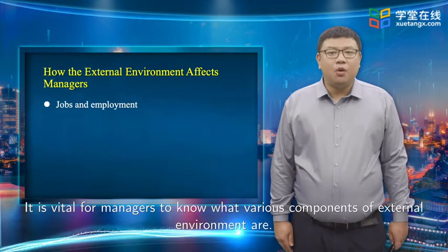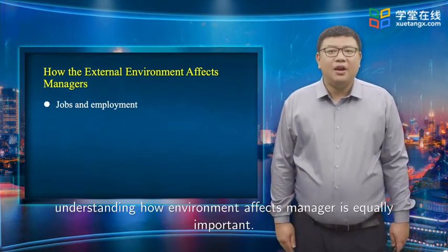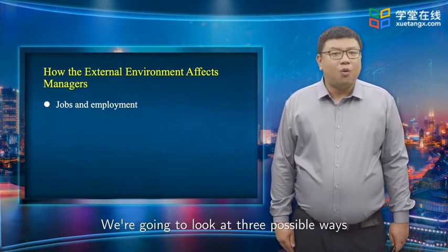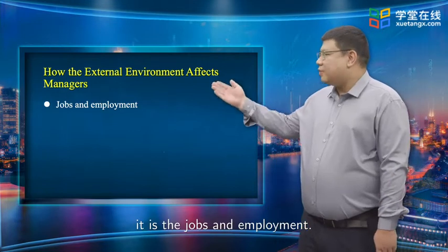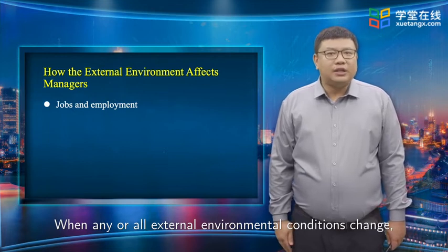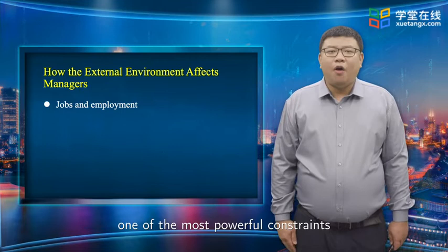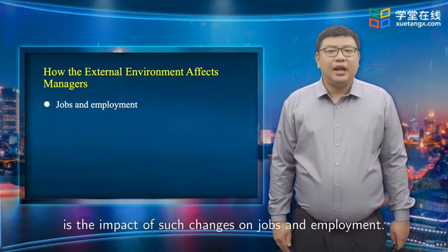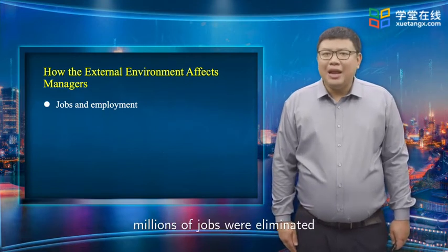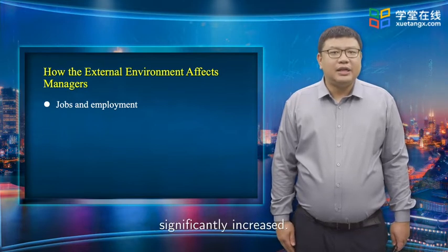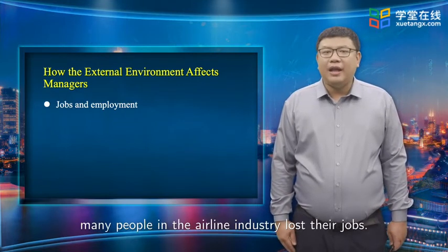It is vital for managers to know what various components of the external environment are; however, understanding how the environment affects managers is equally important. We are going to look at three possible ways that the environment constrains and challenges managers. First, it is jobs and employment. When external environmental conditions change — such as economic, demographic, technological, or globalization factors — one of the most powerful constraints managers face is the impact on jobs and employment. For example, during the last global recession, millions of jobs were eliminated and the unemployment rate significantly increased. Similarly, because of travel restrictions during the pandemic, many people in the airline industry lost their jobs.